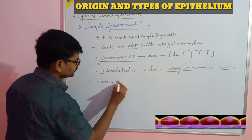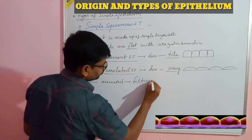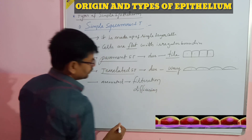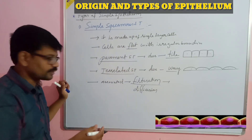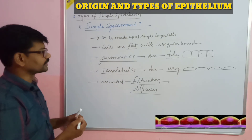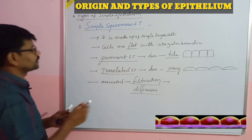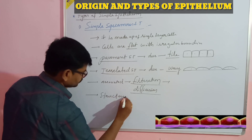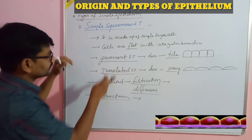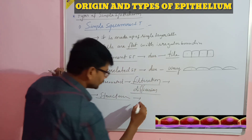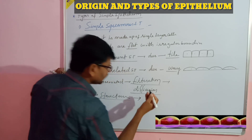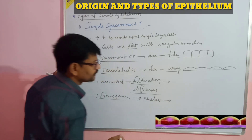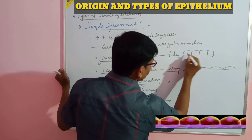Simple squamous epithelium is associated with filtration and diffusion. Filtration occurs mostly in the kidneys and nephrons, while diffusion occurs in the exchange of gases in the lungs. Looking at the structure, the cells may be flat, tile-like, or wavy-like. The nucleus is present in the center of the cell and is oval in shape.